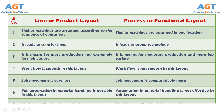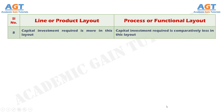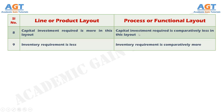Number 7: In product layout, machine utilization is poor, whereas machinery utilization is better in process layout. Number 8: In product layout, capital investment required is more, whereas capital investment required is comparatively less in process layout. Number 9: In product layout, inventory requirement is less, whereas inventory requirement is comparatively more in a process layout.